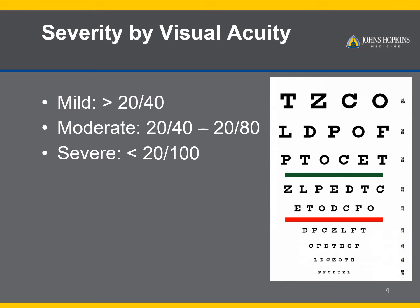The severity of amblyopia is defined by the best visual acuity that can be achieved in either eye. Mild amblyopia is a visual acuity greater than 20/40. Moderate is between 20/40 and 20/80, and severe is less than 20/100.